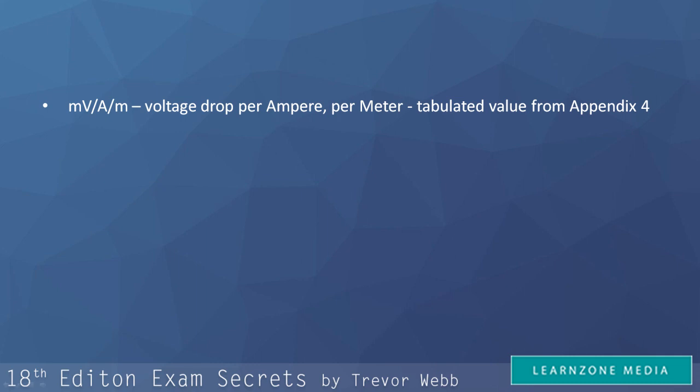So if you now return to the formula for the calculation of voltage drop in copper conductors, you will now know that millivolts per ampere per metre within the formula stands for this tabulated value, and now you know where to find it.